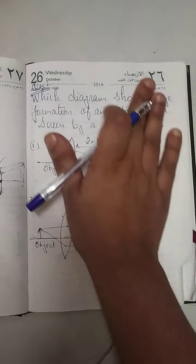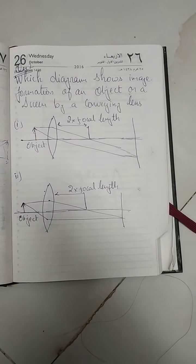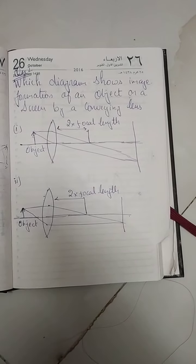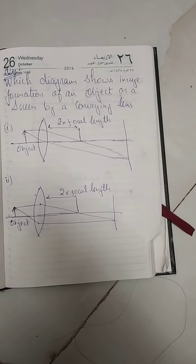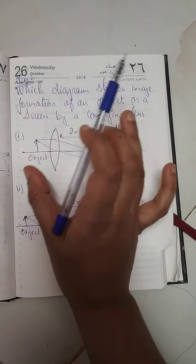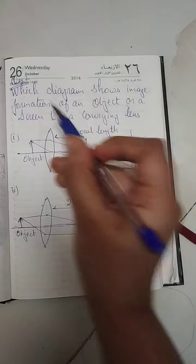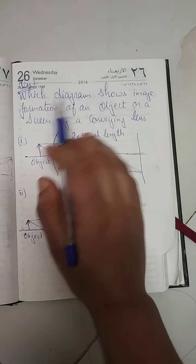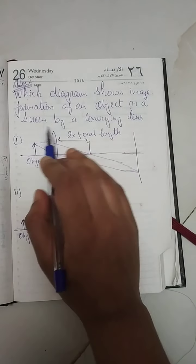Welcome students, my name is Arwa and my channel name is Arwa and Physics. This is question number two of sample paper class 10 CBSE board. This physics question asks: which diagram shows image formation of an object on a screen by a converging lens?